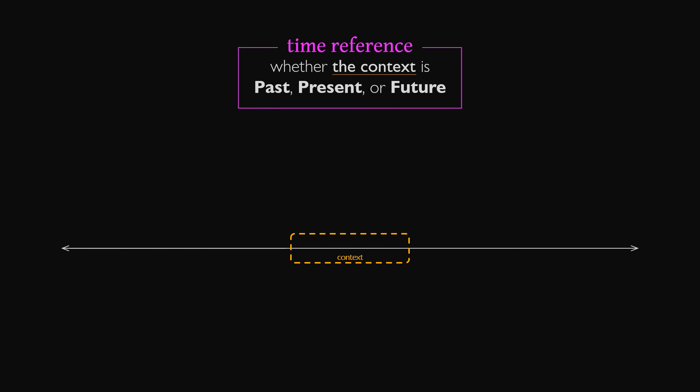In summary, we naturally frame situations in a context. The timing of that context then determines whether the tense is past, present, or future, regardless of when relevant verbs take place.